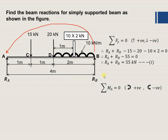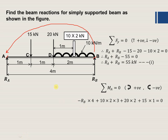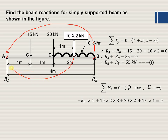The perpendicular distance from B to A is 4 meters, so the moment due to RB is minus RB into 4. The converted UDL of 10 into 2 = 20 kN produces a clockwise moment about A, with a perpendicular distance of 1 plus 1 plus 1 = 3 meters from point A, so it is positive: 20 into 3.